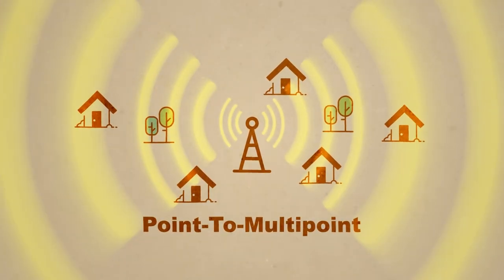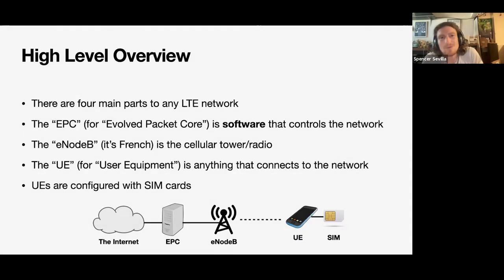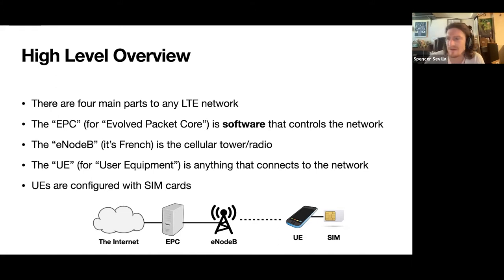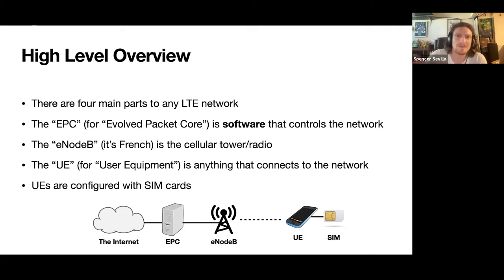It's a point-to-multipoint setup because it's going to cover a big swath of area. The UE is a generic phrase for user equipment — anything that connects to the network. They often use the phrase "handsets" when talking about cell phones. CPE is another phrase we've been using, standing for consumer premise equipment when it's installed. From the perspective of LTE, these things are equivalent. We configure the UEs by giving them SIM cards.